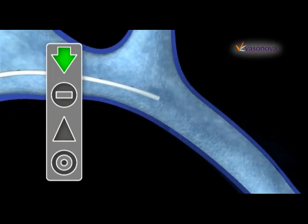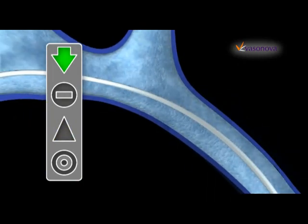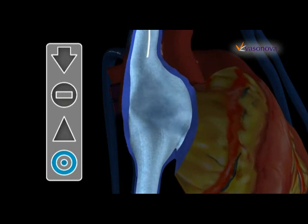If the catheter tip inadvertently advances beyond the cavoatrial junction and into the right atrium, the orange 'do not enter' sign illuminates, indicating that the catheter tip is now moving away from the heart. As the catheter is withdrawn back to the proper location, the blue bullseye appears again.